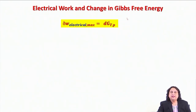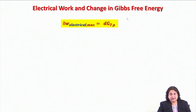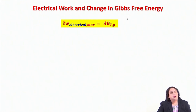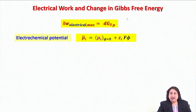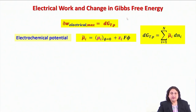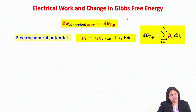This is because when we try to extract the maximum amount of electrical work from an electrochemical cell, we do so under reversible conditions, when it becomes equal to the decrease in Gibbs free energy at a given temperature and pressure. If we introduce the concept of electrochemical potential, we find that this dG_TP is related to the electrochemical potential times dN_i for each component i in the electrochemical system.